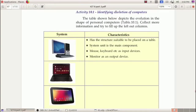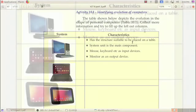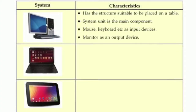Now let's move on to our first activity of this chapter: identifying the evolution of computers. A table is given in our textbook on page number 147, which shows the evolution in the shape of personal computers. We can see a desktop computer, then a laptop and a tablet, and we have to write the characteristics of these three types and fill the table.